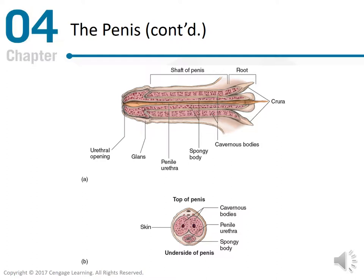Below you will see a diagram of the penis. This is figure 4.1, interior structure of the penis. The first part is a view from above the interior structure of the penis, and the bottom diagram is a cross-section of the penis.